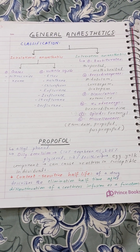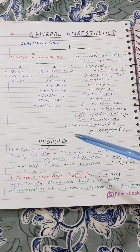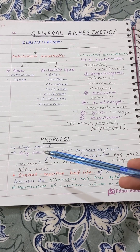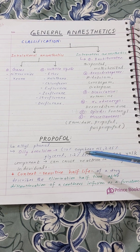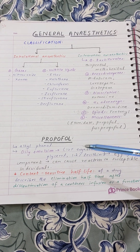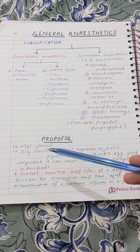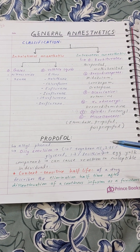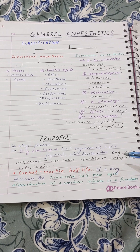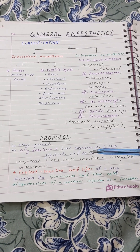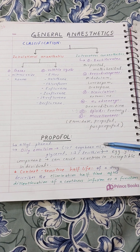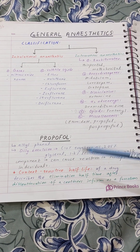Our first IV anesthetic drug belongs to the miscellaneous class — propofol. It is an alkyl phenol organic compound. Its preparation is an oil emulsion containing 10% soybean oil, 2.25% glycerol, and 1.2% lecithin. Lecithin is also a component of egg yolk, so people who are allergic to egg yolk may also show a reaction to propofol. We must ask in the history whether they are allergic to egg yolk before using propofol during general anesthesia.